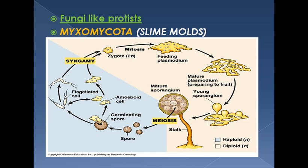We now move to fungi-like protists — first, Myxomycota. Myxomycota are also known as slime molds, as the name indicates they have a very slimy appearance. The multi-nucleated phase is amoeba-like and is known as plasmodium — although this is spelled the same as the malarial parasite, here it refers to the large multi-nucleated creeping stage of Myxomycota or slime molds. This feeding stage uses pseudopodia and keeps increasing in size by feeding.